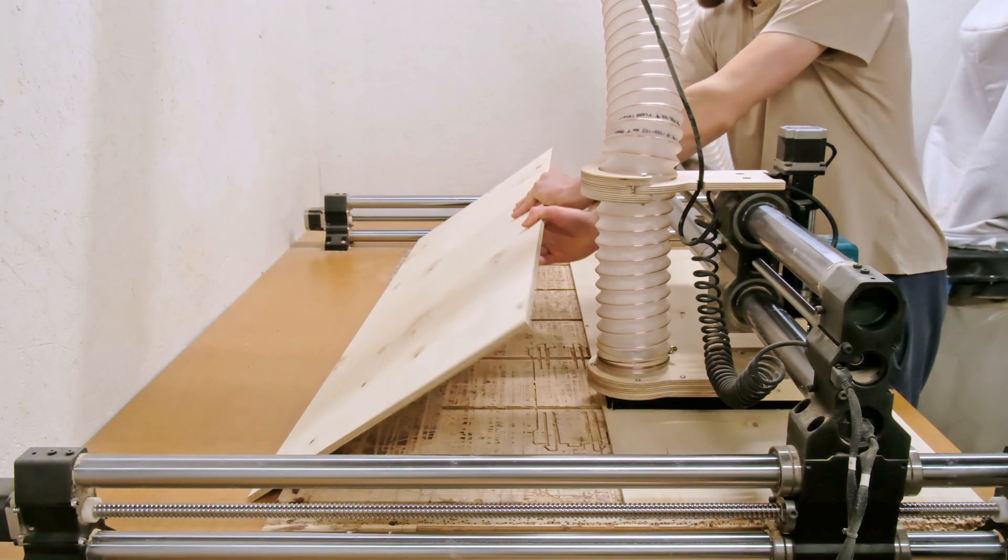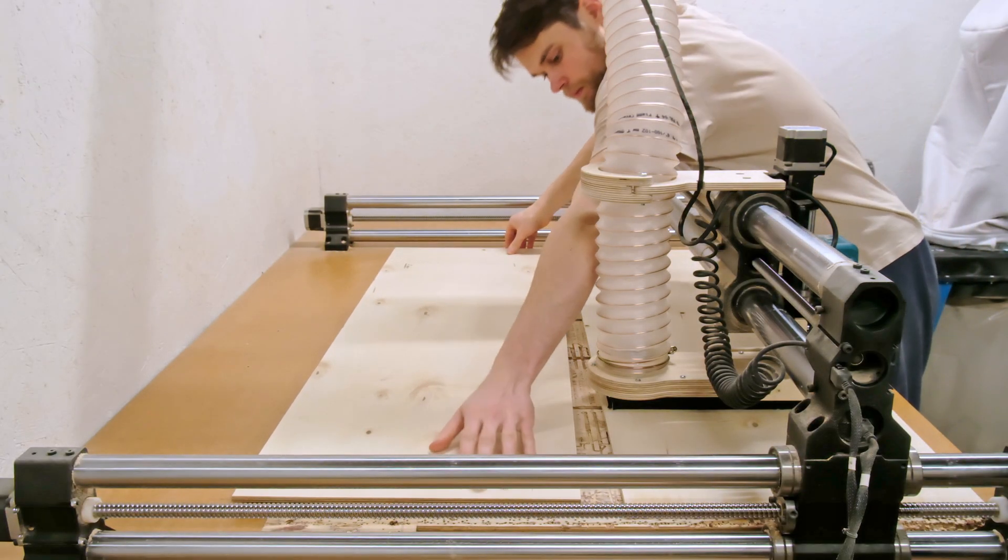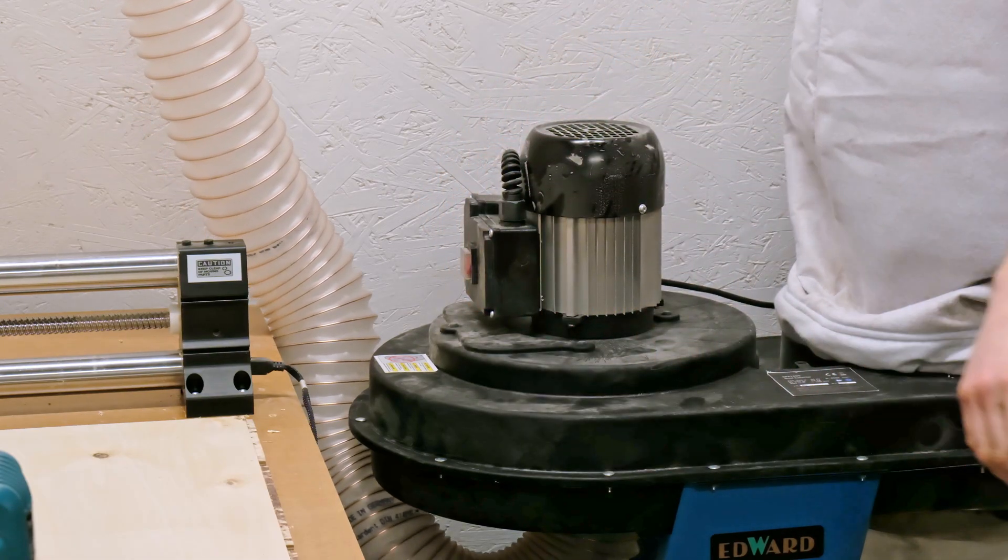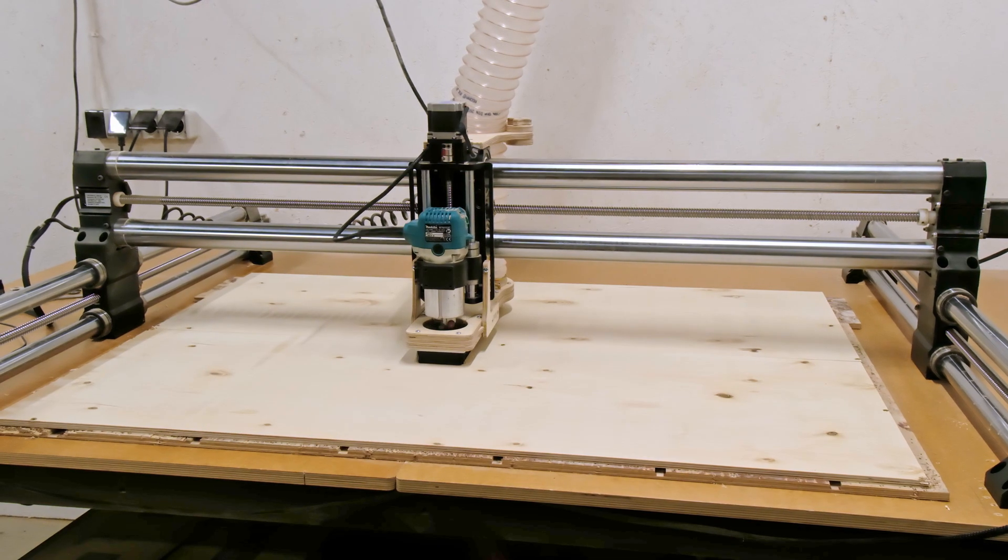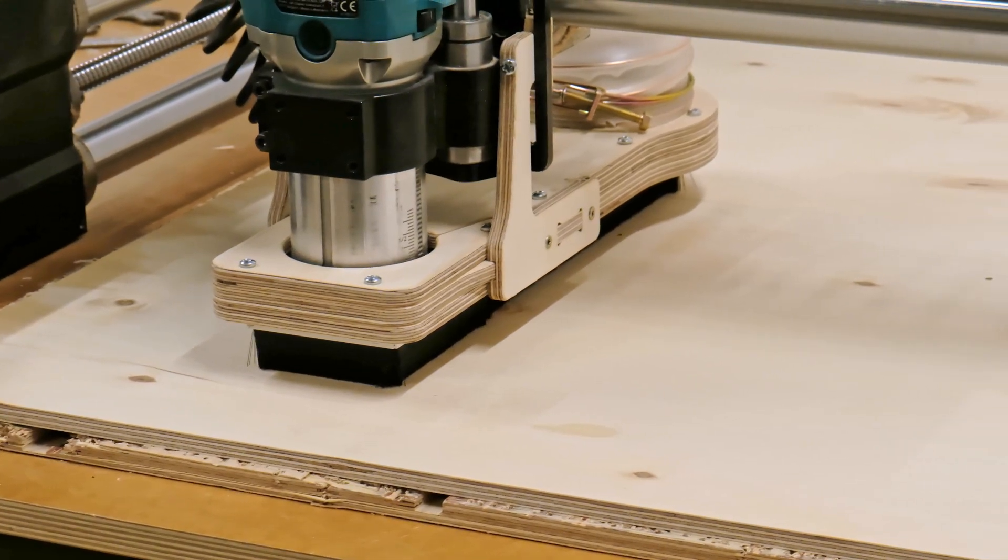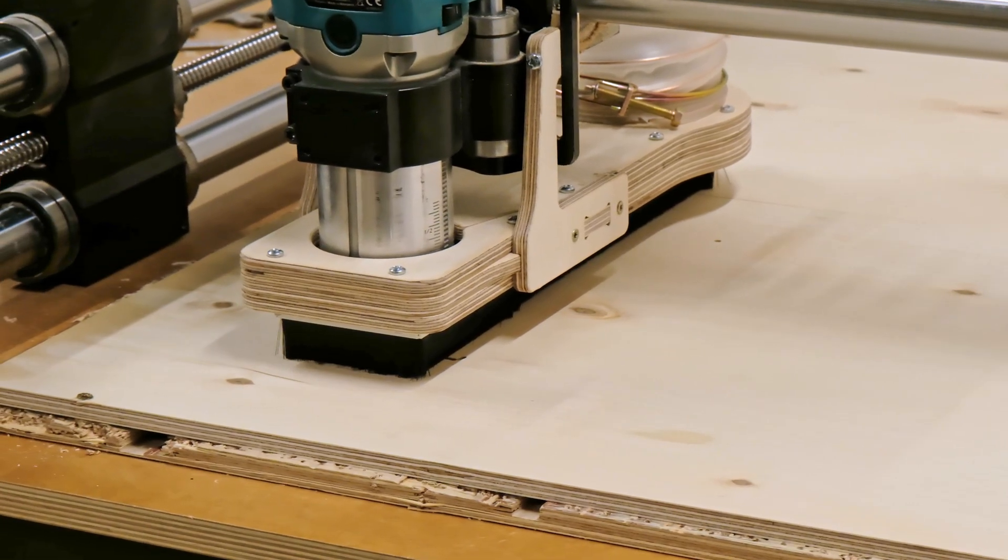The last thing before starting the test cut is adding an extra sheet at the back of the stock material to ensure there are no gaps between the dust shoe brushes and the CNC's work surface. And finally, we are ready to see the project in action.